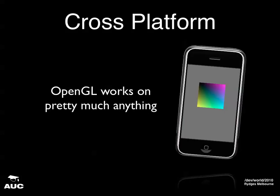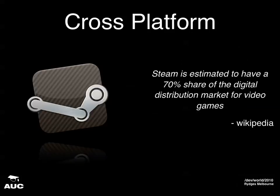OpenGL works on basically everything. It was pretty much inconceivable several years ago — maybe five years ago — that we'd be able to run OpenGL on a mobile phone. Now we've got OpenGL ES2 with shaders and everything working on our iPhones. It's also cross-platform, which means if you want to make a game or a program, you'll be able to use OpenGL on pretty much any platform — Windows, Linux, anything. Something like Steam, which is used by an estimated 70% of computer games distribution, lets you use the same code with OpenGL on Windows, Mac, or anything.